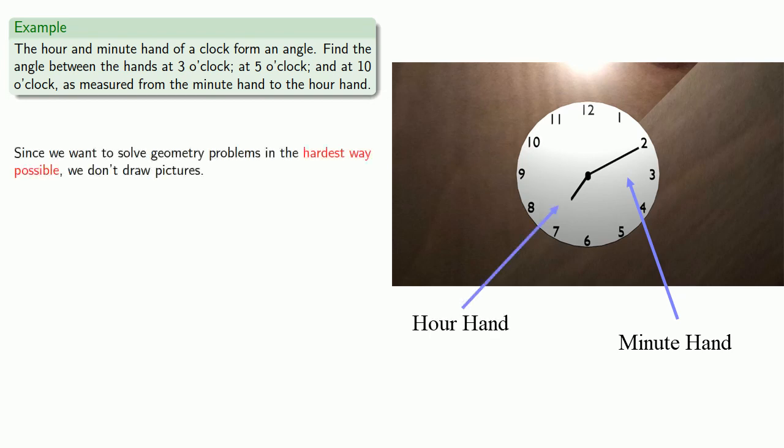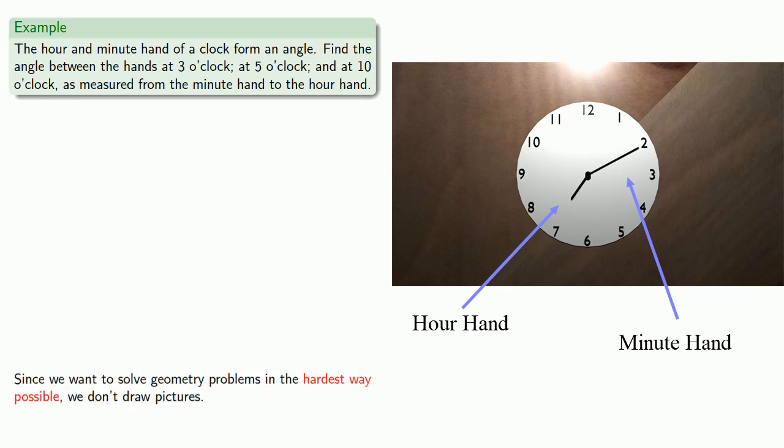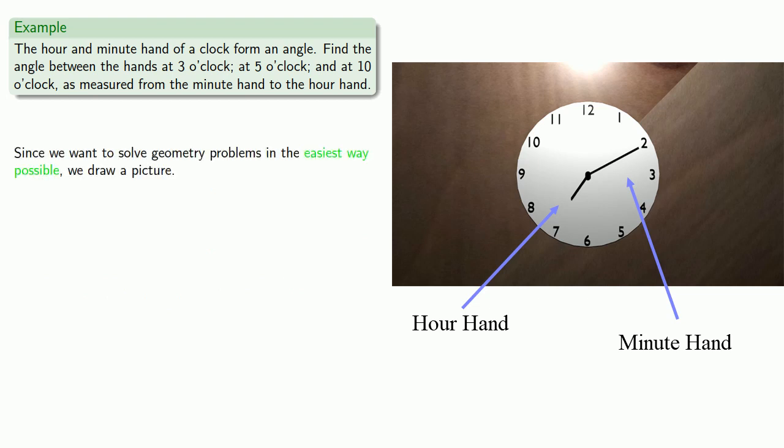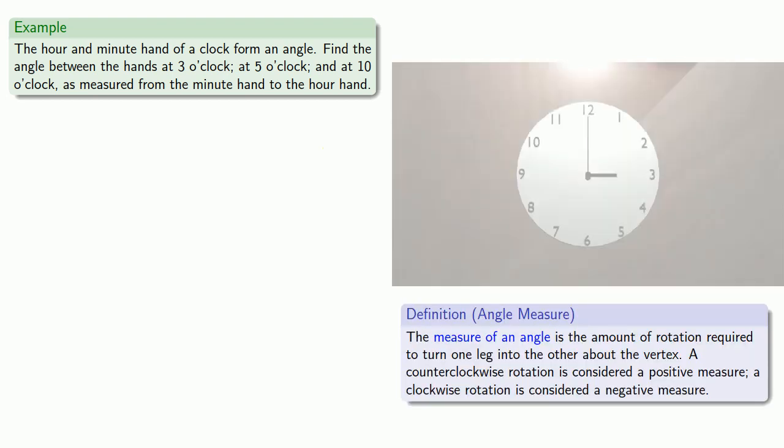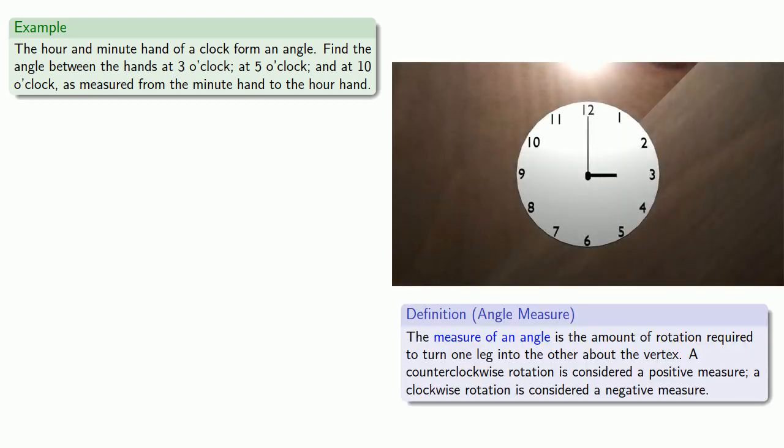Since we want to solve geometry problems in the hardest way possible, we don't draw a picture. Wait, wait, that's the wrong script. Since we want to solve geometry problems in the easiest way possible, we draw a picture. So we'll draw our picture. And remember, the measure of an angle is determined by the amount of rotation to turn one leg into the other around the vertex. So we want to rotate from the minute hand to the hour hand.